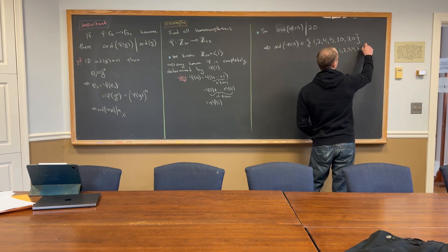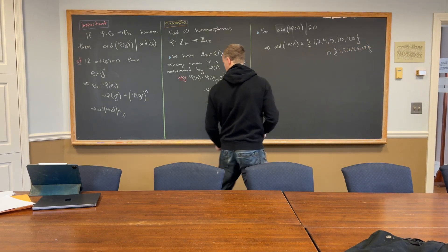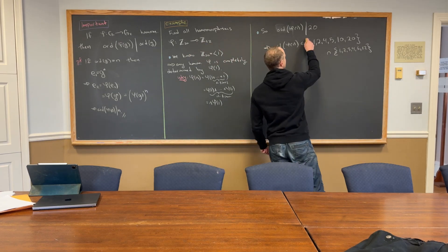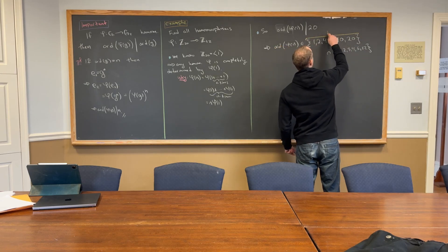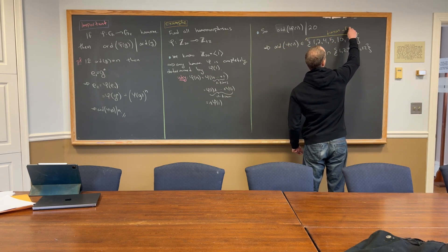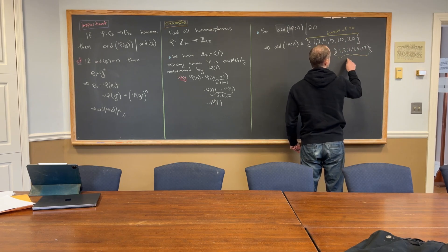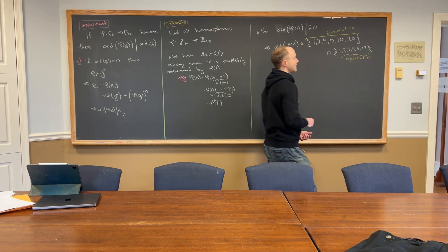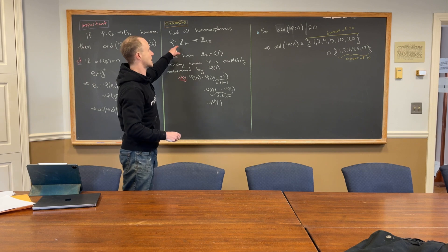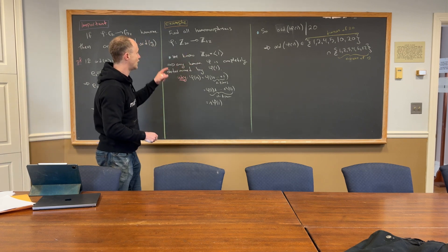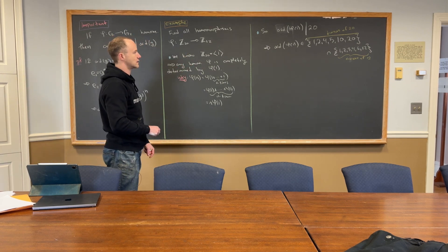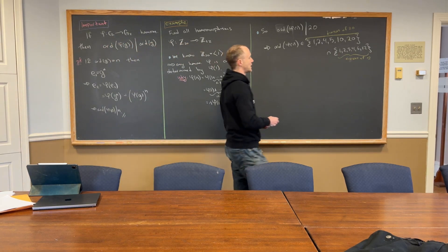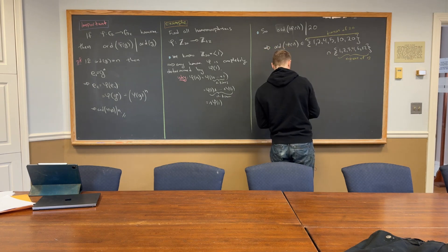But, I'll put it. Yeah, so, I guess, like, we could put it really succinctly like this. The order of phi of one has to be in the intersection of these two sets, right? This is divisors of 20, and then this are divisors of 12. Divisors of 20, because that's coming from our domain. Divisors of 12, that's coming from our codomain, right? Like the image. So, that leaves us with only a few possibilities, right?